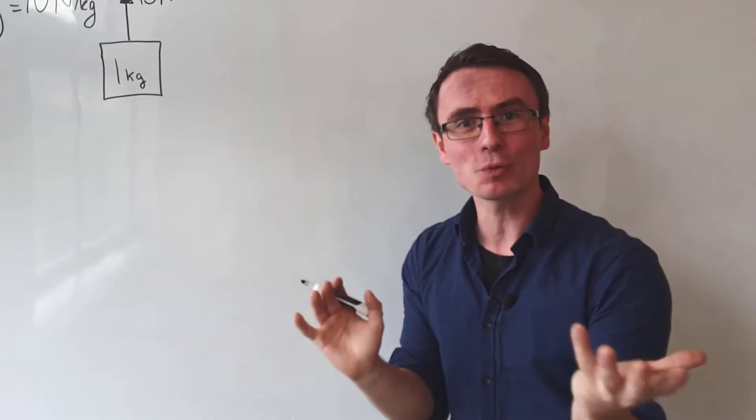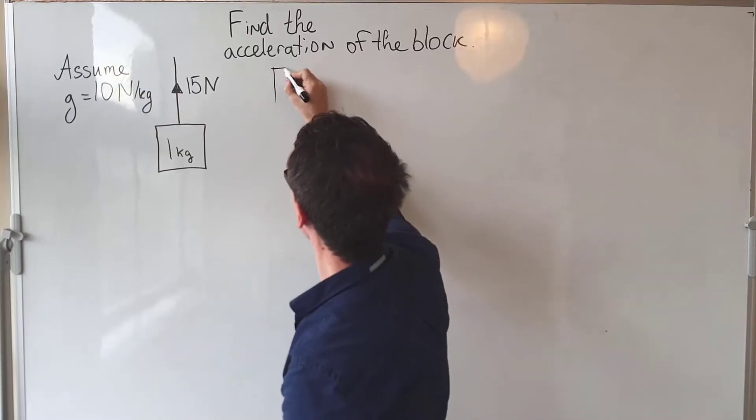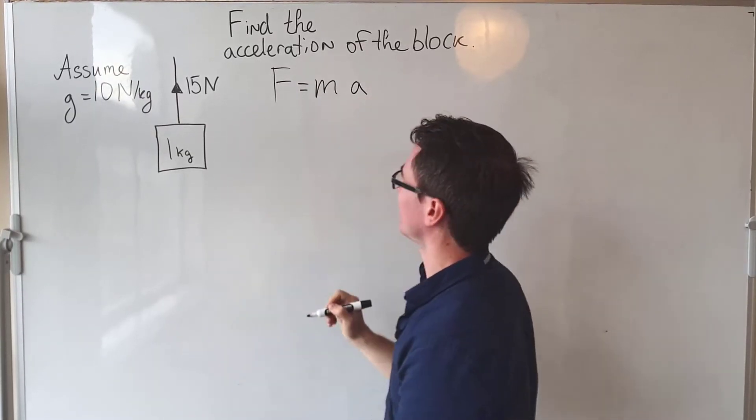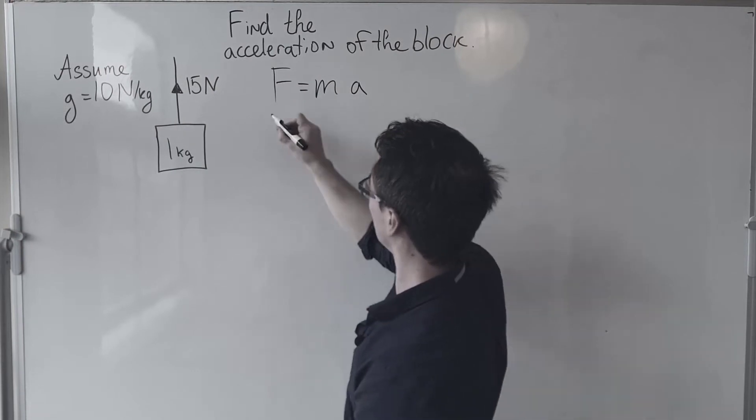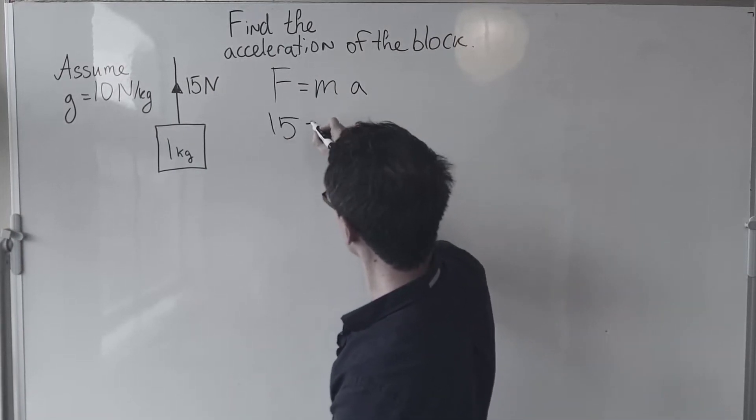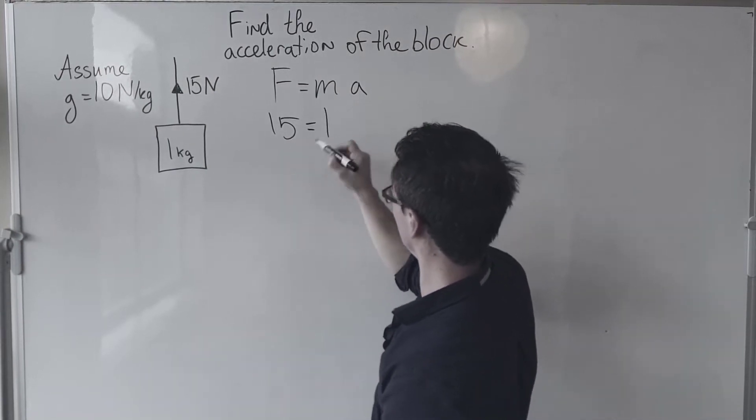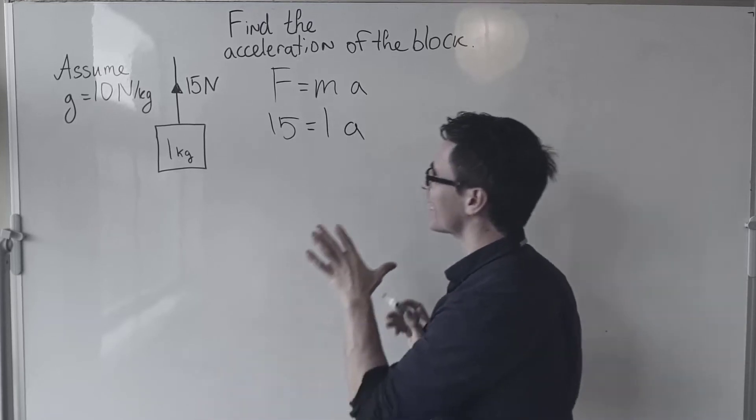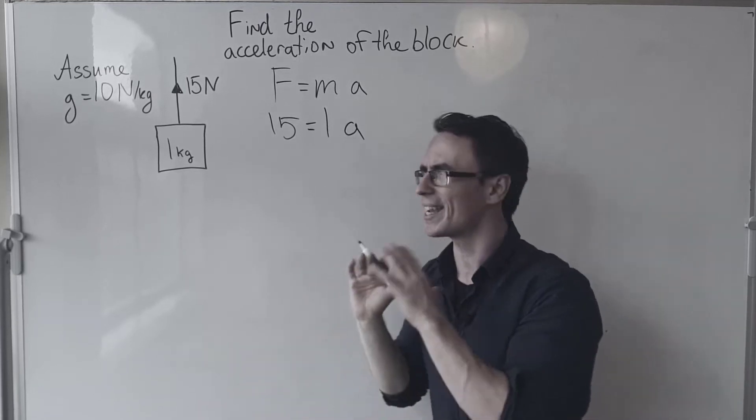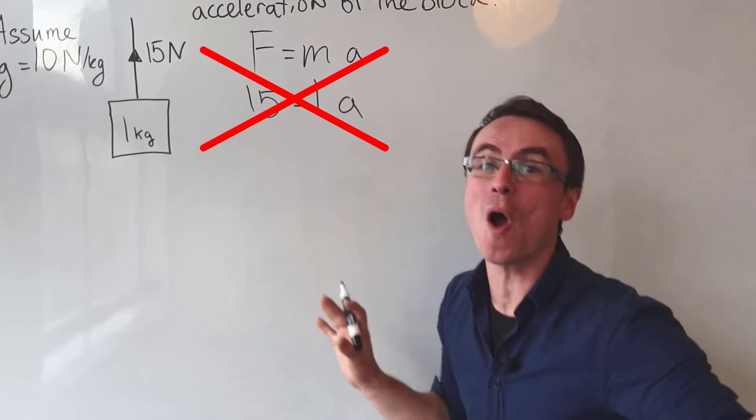Oh wait, hang on a minute, that's really easy because force is just equal to mass times acceleration. Okay, well we're given the force which is 15 newtons, we're given the mass which is one, meaning that the acceleration is... wait, no, I can't even say this, this is wrong.